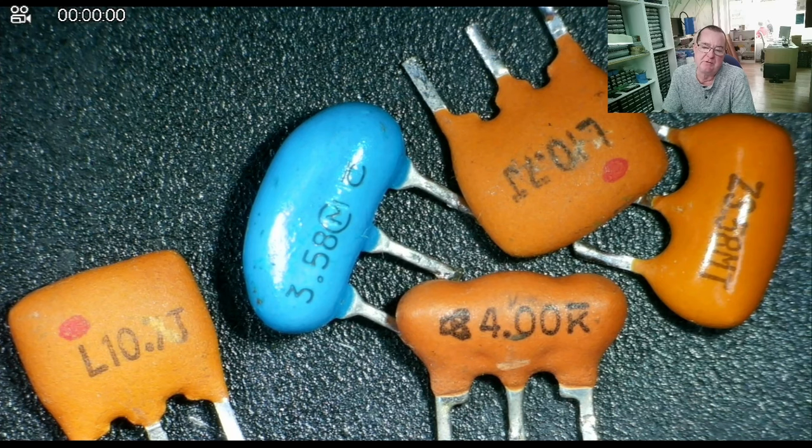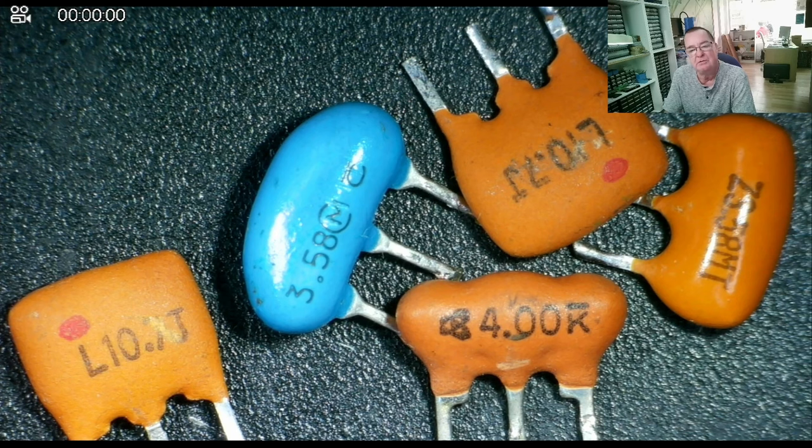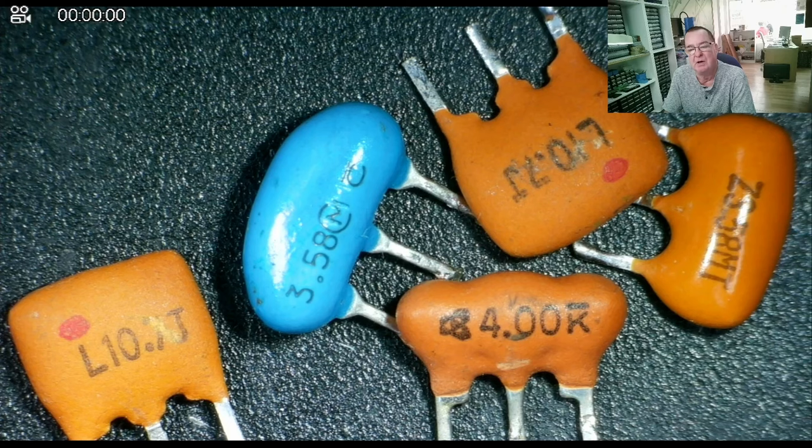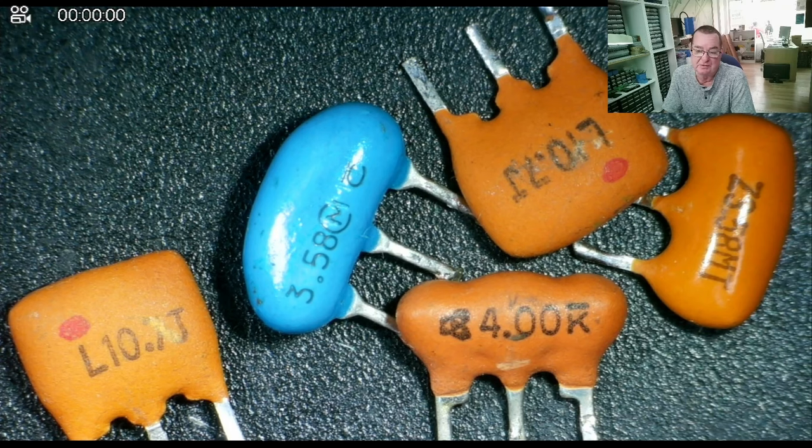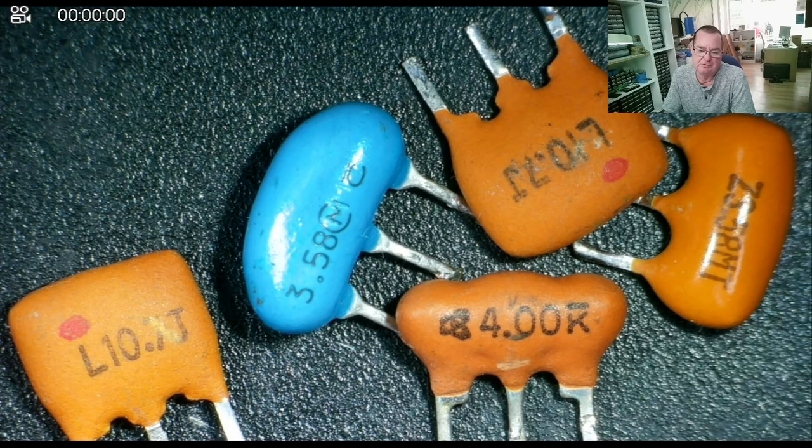You can see they're marked with a frequency, 3.58, this is megahertz, 10.7, 400k and so on. So if you see these things, they are ceramic resonators, and they are basically the same as a crystal or crystal oscillator.